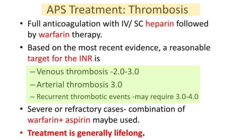The main treatment concern in APS is thrombosis, so the cornerstone of treatment is anticoagulation. We initiate anticoagulation with IV or subcutaneous heparin followed by warfarin therapy if a thrombotic event occurs along with positive antibodies. Based on current evidence, the target INR is 2–3 for venous thrombosis, up to 3 for arterial thrombosis, and 3–4 for recurrent thrombotic events. Severe refractory cases may use combination aspirin with warfarin, and treatment is generally lifelong.